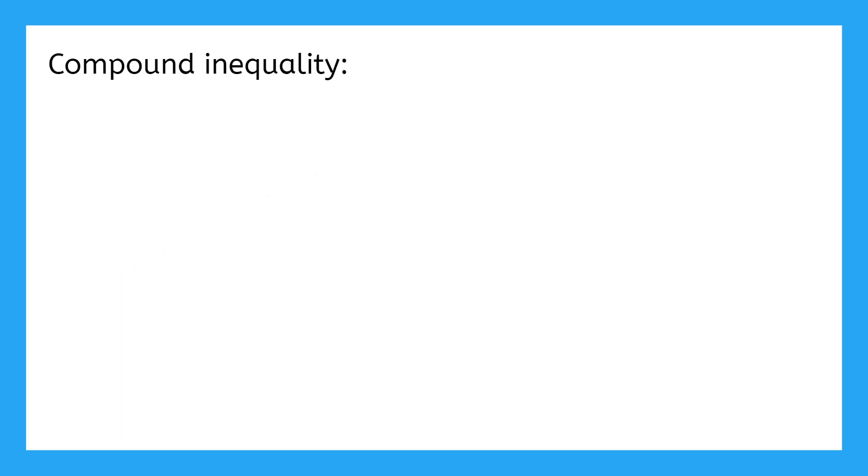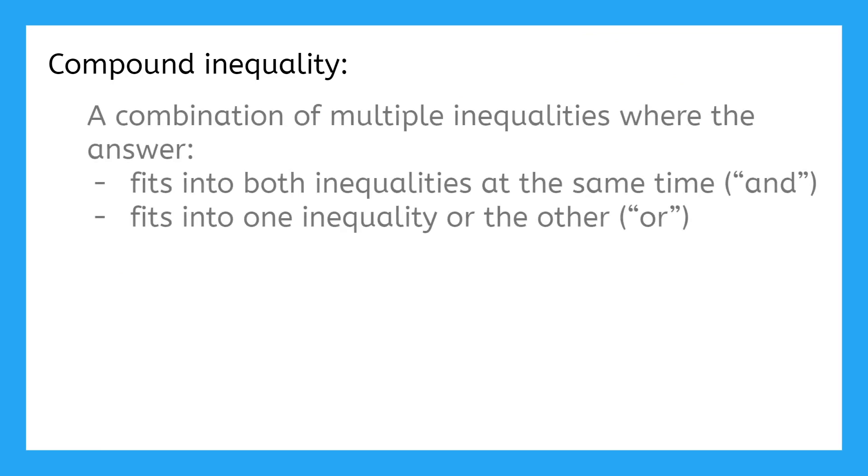So what is a compound inequality? A compound inequality is when you combine multiple inequalities, either because the answer has to be in both at the same time, or because the answer can either be in one inequality or the other. We use two words to denote the two types, 'and' and 'or.'